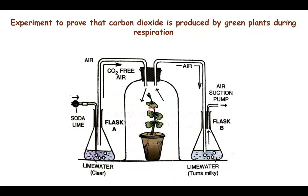The green plant performs respiration, and the resulting air rises through the next bent tube into a conical flask with lime water, which turns milky. Afterwards, the air passes to the suction pump, which maintains the unidirectional flow of air. To ensure the green plant only performs respiration and not photosynthesis, the bell jar is covered with black cloth or black paper, or the entire experiment is carried out in darkness, preventing photosynthesis from interfering with the experiment.